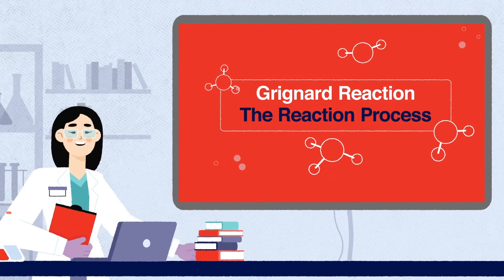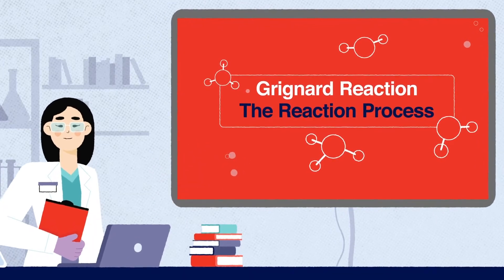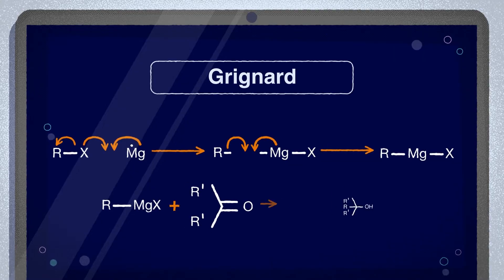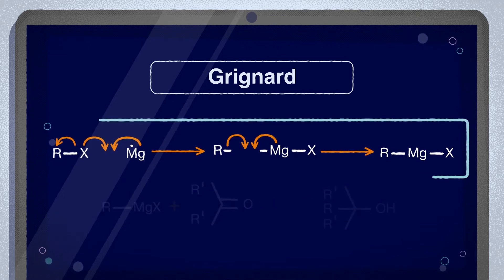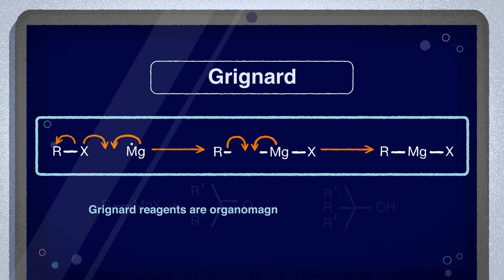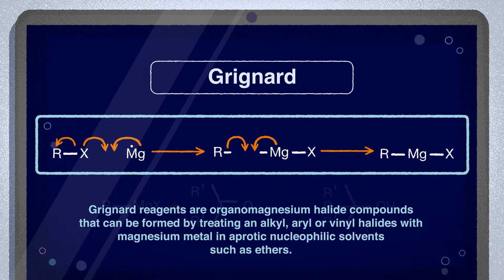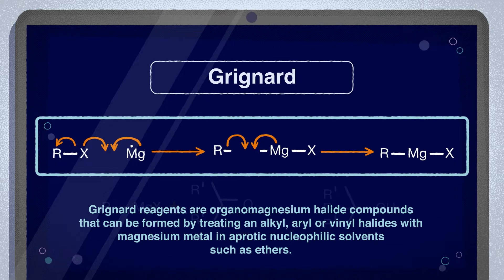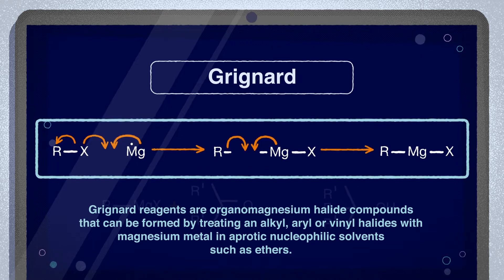So let's take a look at the reaction process. Grignard reagents are organomagnesium halide compounds that can be formed by treating alkyl, aryl, or vinyl halides with magnesium metal in aprotic nucleophilic solvents such as ethers.